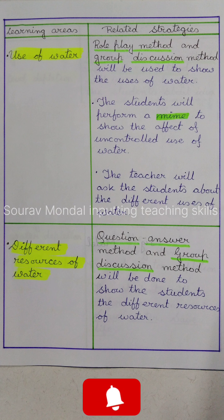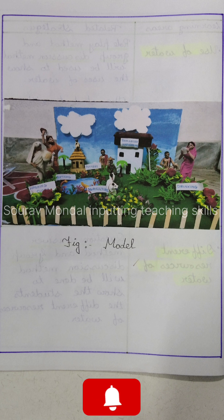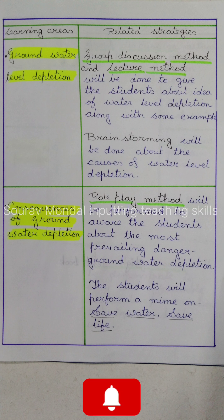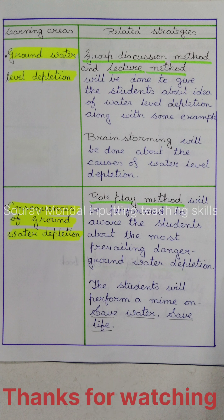The next learning area is Different Resources of Water. After that, the learning area is Groundwater and Consequences of Groundwater Depletion, where I mentioned strategic group discussion. With the help of information and role play, some learners will perform a mime on a related topic, along with the slogan 'Save Life, Save Water.'